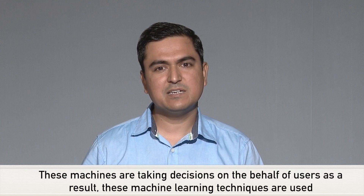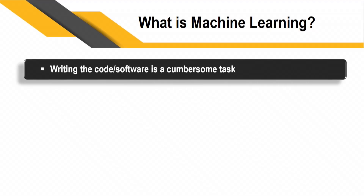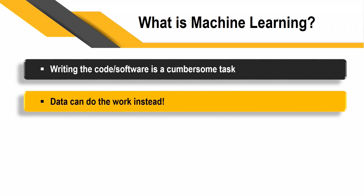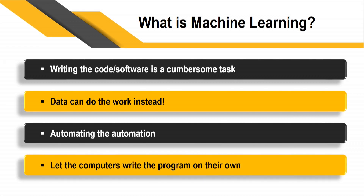So why are these machine learning algorithms used? Now we would like to discuss what machine learning exactly is. Writing code on behalf of the user — that is machine learning. When we write code ourselves it takes too much time and is cumbersome. So let the data do the work: this is somewhat like automating the automation, letting computers write the program on their own.